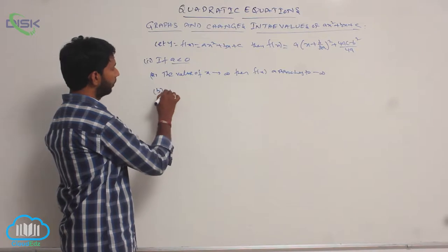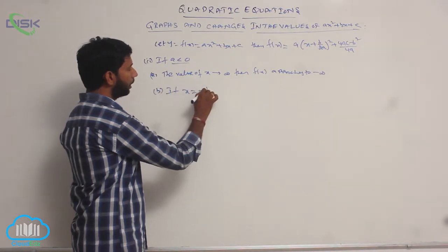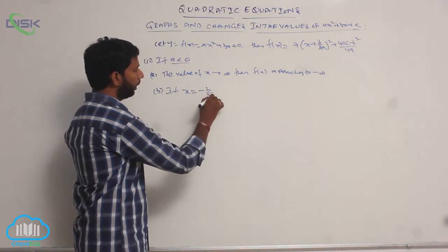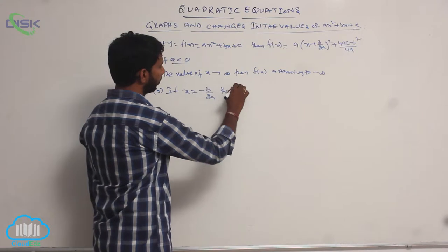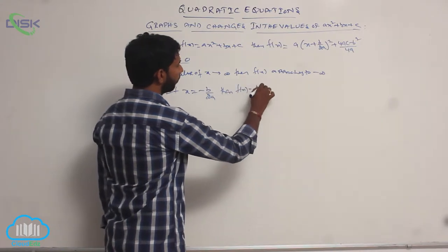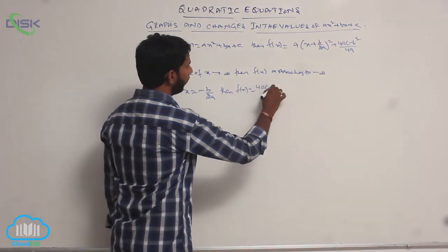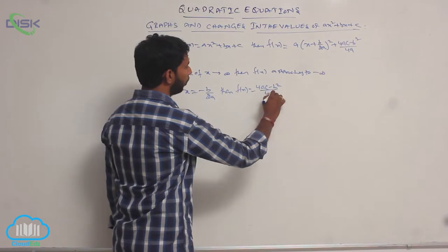And next, if x is equal to minus b by 2a, then f of x is equal to 4ac minus b squared by 4a.